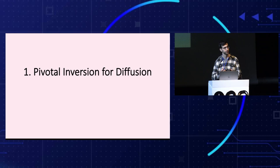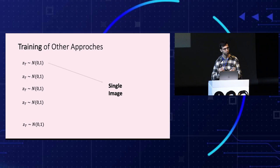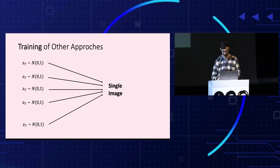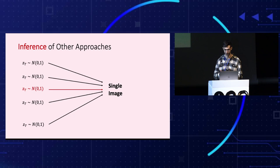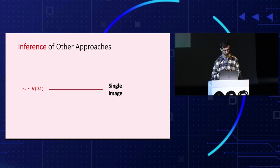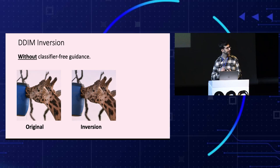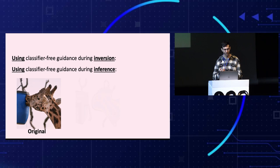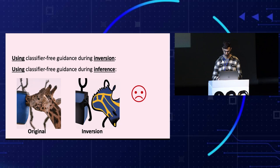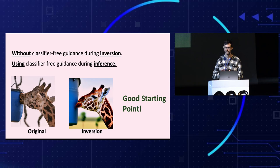We observe that other approaches aim to map all noise vectors to a single image during optimization. This is highly inefficient, as only one noise vector is used at inference. Instead, we use a single noise vector during optimization. We first consider the direct DDIM inversion. Without classifier-free guidance, DDIM inversion reconstructs the image well, but it is not editable, as classifier-free guidance is essential for our editing. Using classifier-free guidance for both inversion and inference completely fails. Using classifier-free guidance only at inference is not accurate, but does provide a pretty good starting point for our optimization.